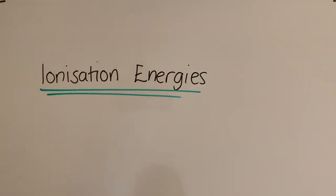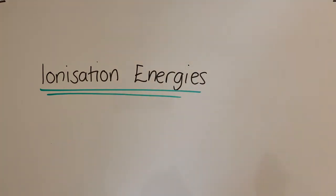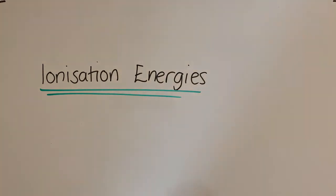In this video, we are going to be looking at ionization energies. Ionization is when we start off with an atom and knock off an electron to form an ion. If we have an atom and we knock off an electron, we form a plus one ion. We can also do this with ions: if we have a plus one ion and knock off an electron, we form a plus two ion.